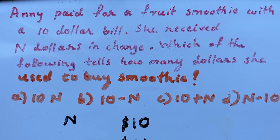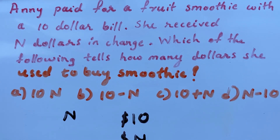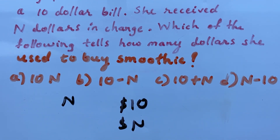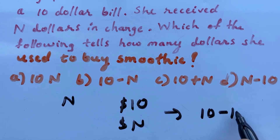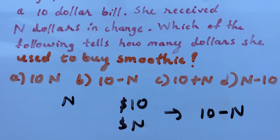So how much did she pay? She paid 10 minus n dollars, since she received n dollars back. So the answer is option B: 10 minus n. See you in the next video, bye bye.